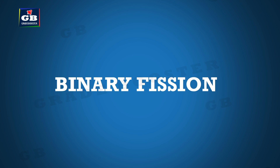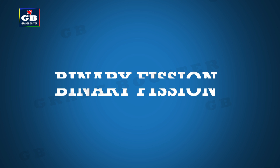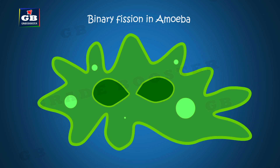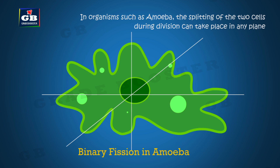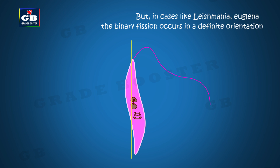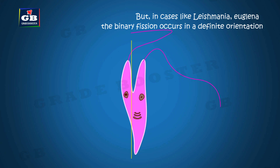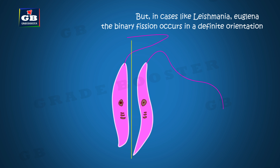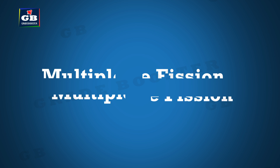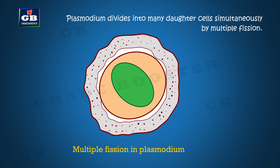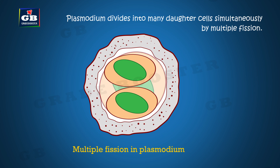The first mode of asexual reproduction is binary fission. Binary fission means splitting into two. Amoeba, a single-celled organism, reproduces by splitting into two. It can split in any direction because it has no specific shape. But organisms like Leishmania split in a specific direction as they have a specific shape. Multiple fission means splitting into many — some single-celled organisms like Plasmodium divide into many, and this is called multiple fission.